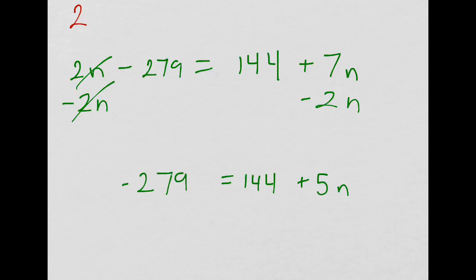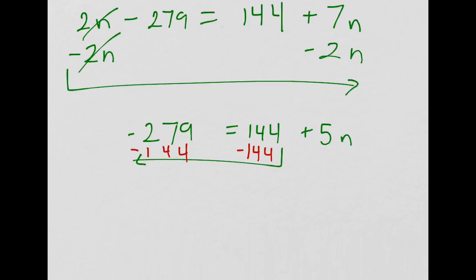Well, I got my variables to the right side, so that must mean I need to move my numbers to the left. I got my variables to the right, so I need to move my numbers to the left, and I do that by doing the opposite. So, it's already a positive 144, I subtract 144, what do I get?